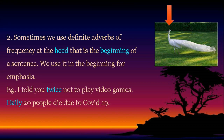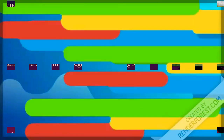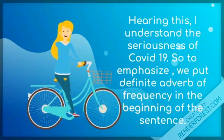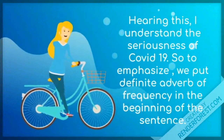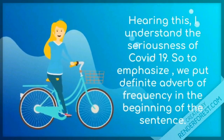Rule number two: sometimes we use definite adverbs of frequency at the head — that is, the beginning of a sentence. Normally we use this for emphasis. Example: 'I told you twice not to play video games.' 'Daily, 20 people die due to COVID-19.' Hearing this, I understand the seriousness of COVID-19. So to emphasize, we put the definite adverb of frequency at the beginning of the sentence.